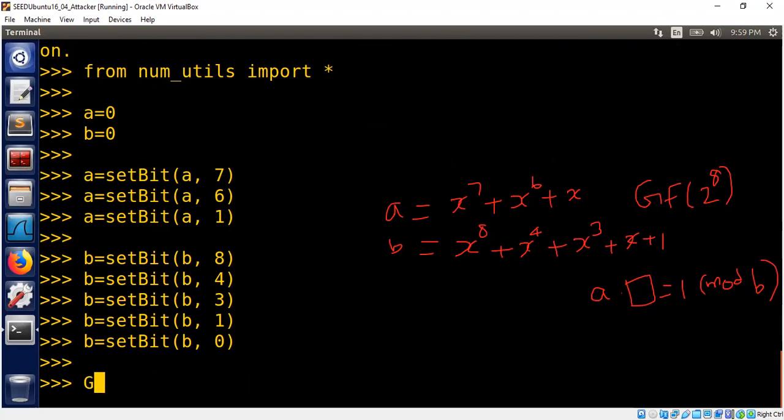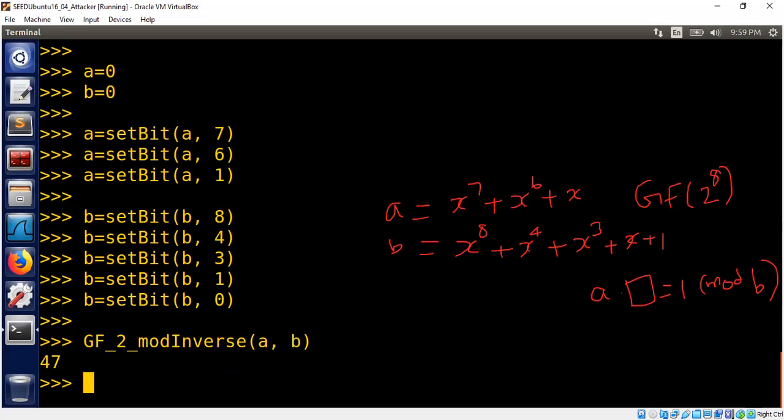Similarly for B, GF 2 mod inverse algorithm, which should give us the inverse of A in this polynomial. Okay, so it shows 47.